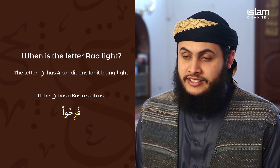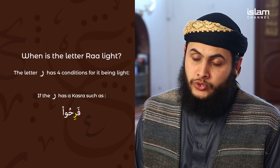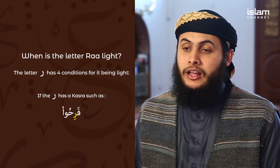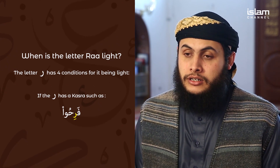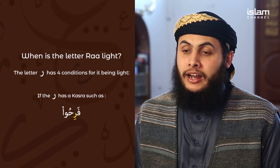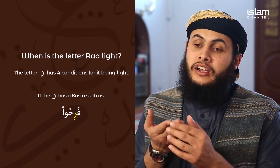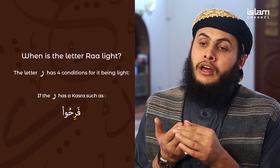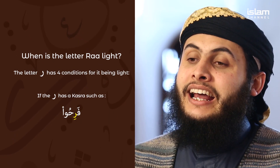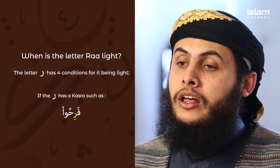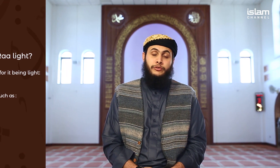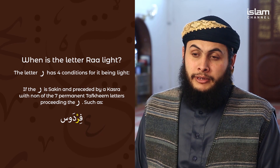When reciting Surah Al-Fatihah for example, we say 'sirat' — the ra here has a kasrah. Making the ra light requires you to make your tongue very thin. Remember the ra comes from the tip of the tongue — make it very thin and lower the back of your tongue. This is the first condition for the ra being light.